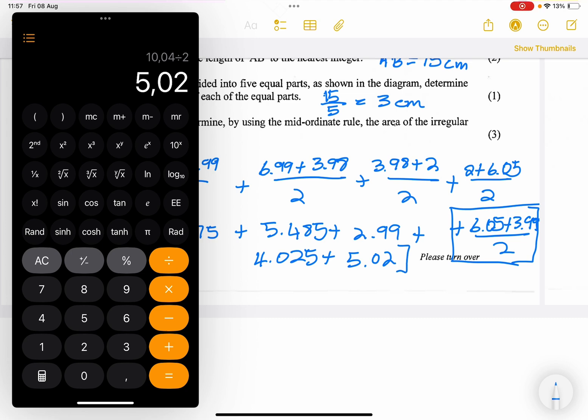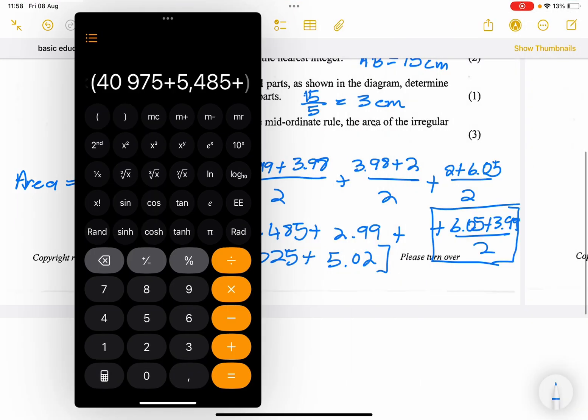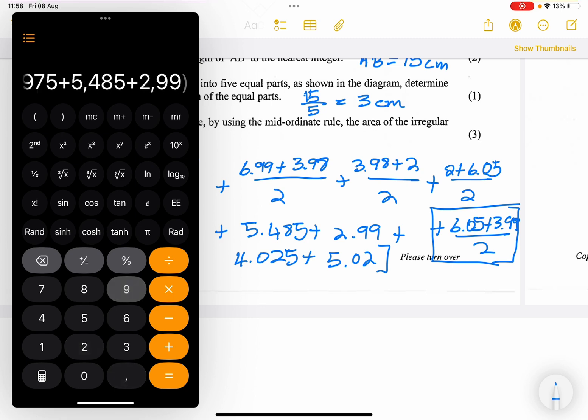And ladies and gents, all that we're simply going to do, remember, we are multiplying them by 3, which is the base that we've got. So that's 3 into 4.975 plus 5.485 plus 2.99, plus another 4.025, and finally, 5.02. And what do we get?